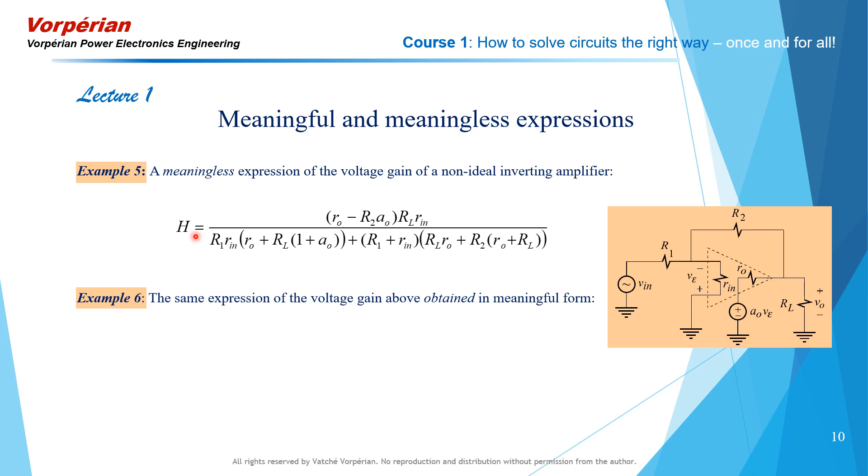Now let us compare the same expression of the voltage gain obtained in meaningful form. Here it is. Up front, I have the ideal inverting gain minus R2 over R1, which you are all familiar with as the inverting gain of an ideal op-amp circuit. That appears up front. It is followed by what appears to be a correction factor which contains the non-ideal components R0, A0, and Rn, along with the rest of the circuit elements.